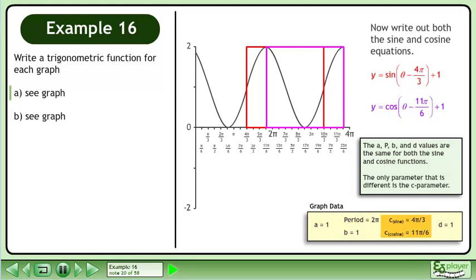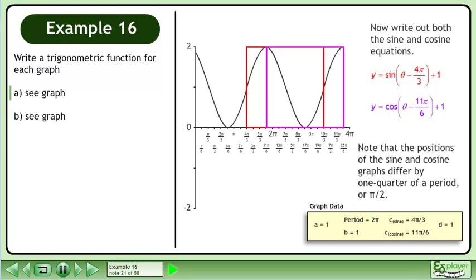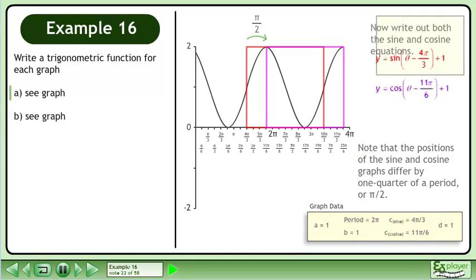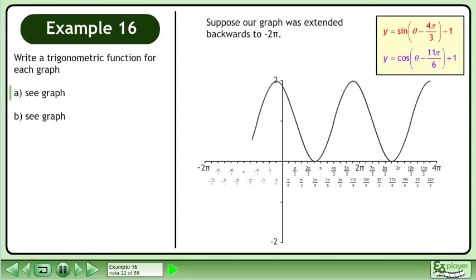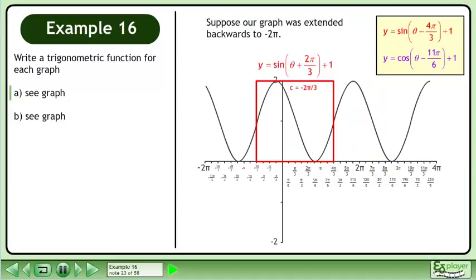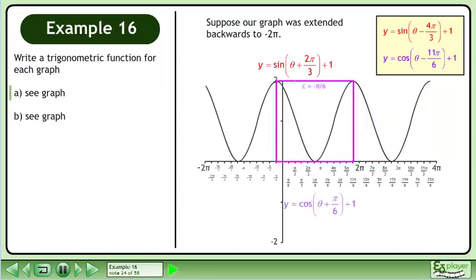The only parameter that is different is the c parameter. Note that the positions of the sine and cosine graphs differ by one quarter of a period, or pi over 2. Suppose our graph was extended backwards to negative 2pi. We could write a second sine function: y equals sine of (theta plus 2pi over 3) plus 1. We could also write a second cosine function: y equals cos of (theta plus pi over 6) plus 1.